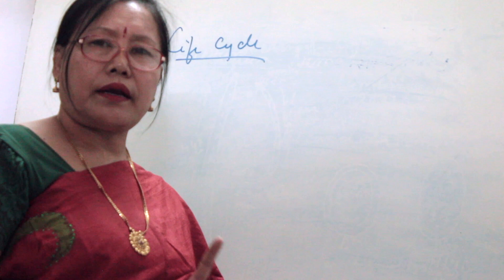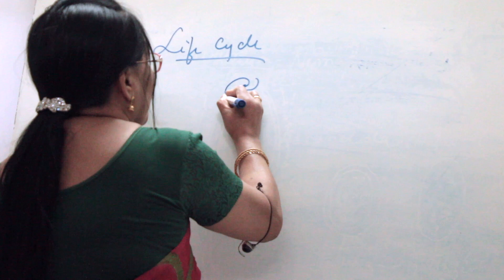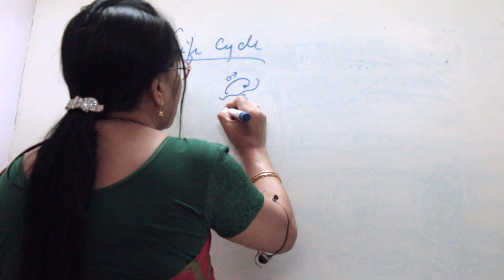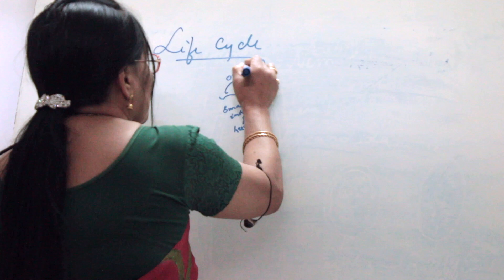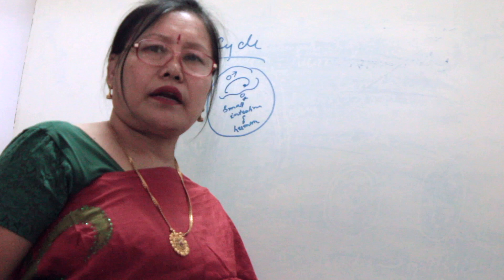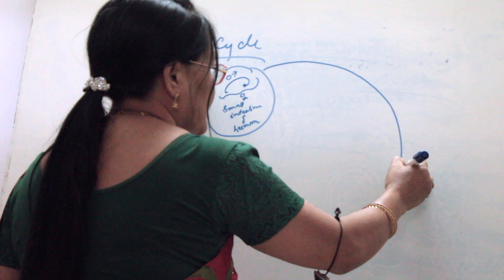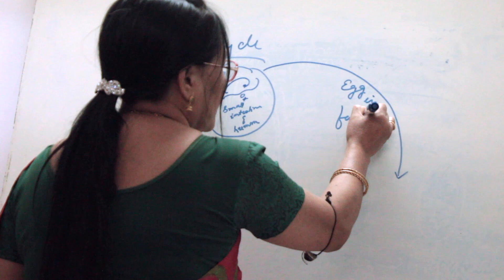The male and female worms are inhabited in the small intestine. After fertilization, they give out fertilized and unfertilized eggs, and those eggs pass out with the feces of the infected person.